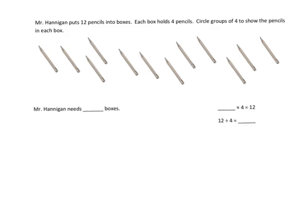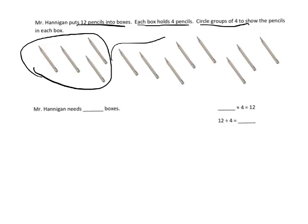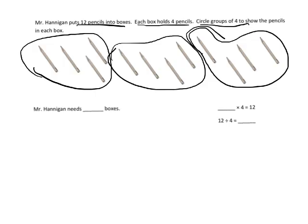So let's do an example. So we've got Mr. Hannigan puts 12 pencils into boxes, each box holds four pencils. Circle groups of four, so there's one, two, three groups. So Mr. Hannigan needs three boxes because there's three groups of four pencils. So our multiplication problem is going to be three times four equals twelve.